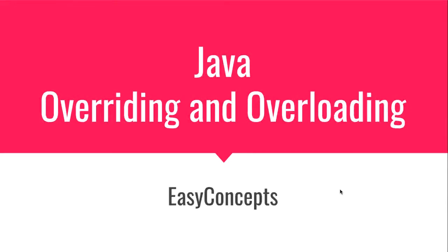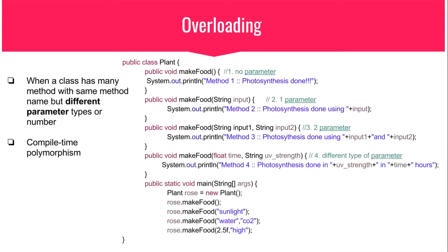Hi YouTube, welcome to my YouTube channel Easy Concepts. Today I'm going to take the topic of overriding and overloading in Java. So let us begin. Polymorphism is the ability to take many forms in an object-oriented programming language like Java — this allows objects to be polymorphic.